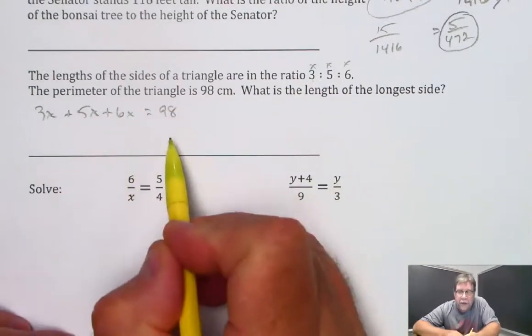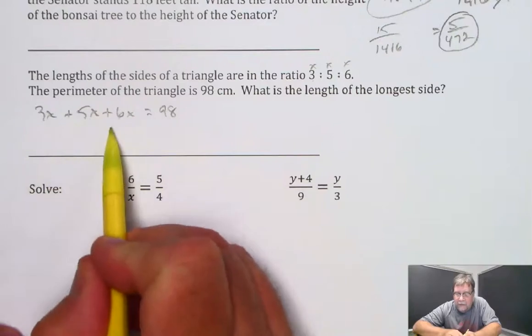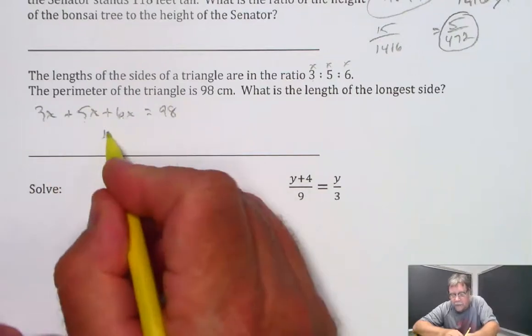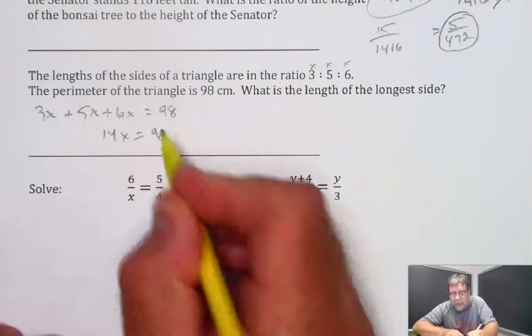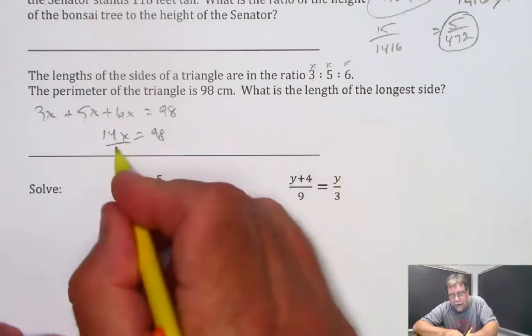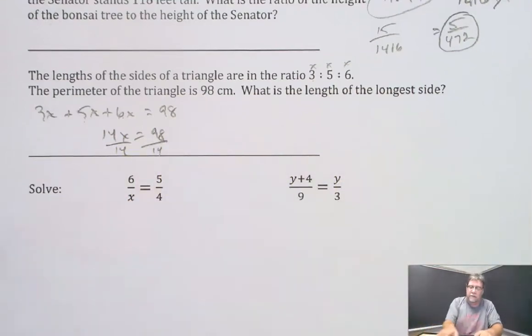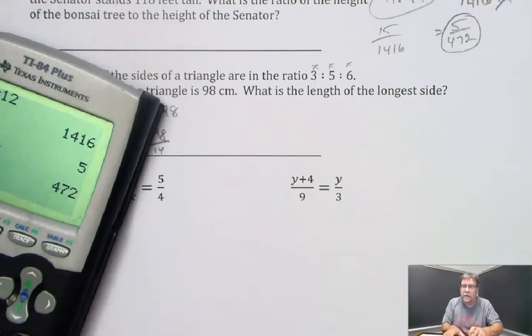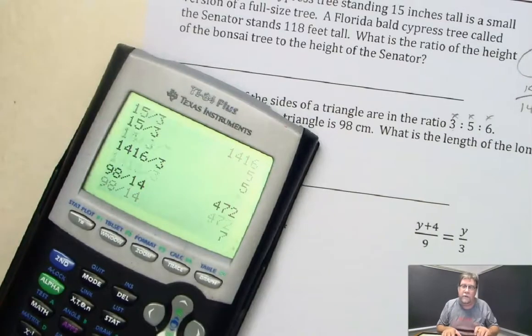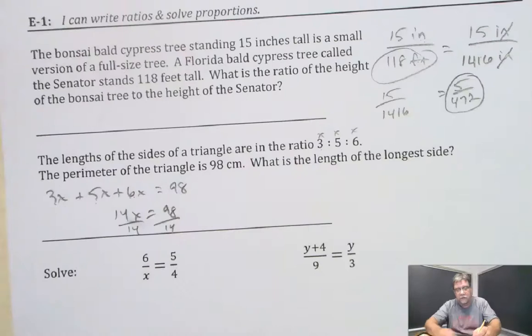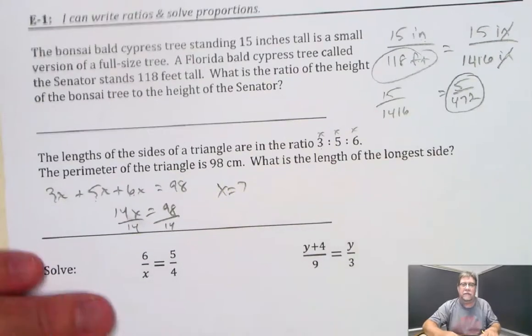And now I can solve this equation for x. So I've got 3, 5, and 6. That's 14x equals 98. If I divide both sides by 14, let's see what 98 divided by 14 is. 98 divided by 14 is 7. So that means x equals 7.